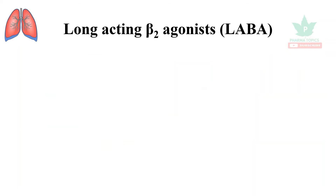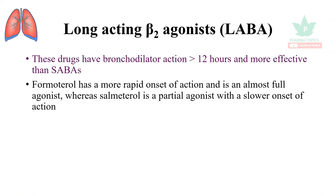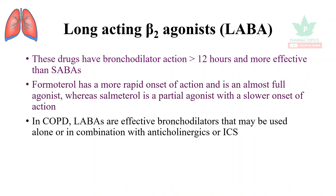Long-acting beta-2 agonists, called LABAs, have bronchodilator action for more than 12 hours and are more effective than SABAs. Formoterol has a rapid onset of action and is an almost full agonist, whereas salmeterol is a partial agonist with a slower onset of action.